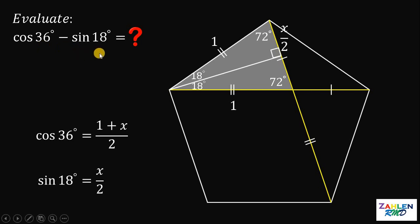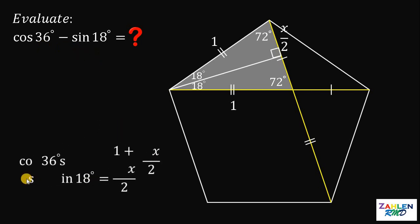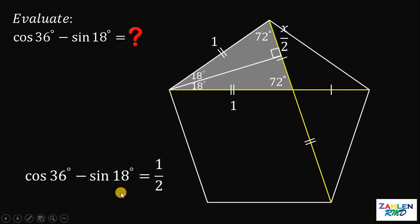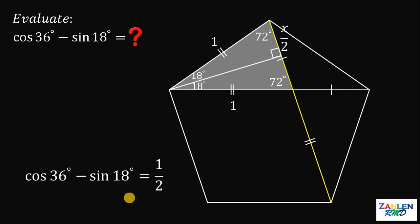Now we compute cosine 36 degrees minus sine of 18 degrees. This equals (1 plus x)/2 minus x/2. Writing (1 plus x)/2 as 1/2 plus x/2, the x/2 terms cancel out. Therefore, cosine of 36 degrees minus sine of 18 degrees equals 1/2. Two different methods give us the same result: cosine 36 degrees minus sine 18 degrees equals 1 half. And as always, we are done.